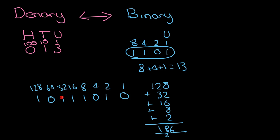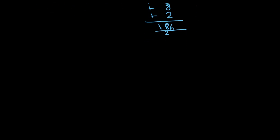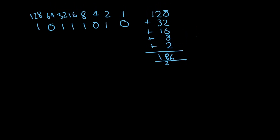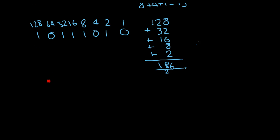All I've done is add up all the numbers that have a one underneath them using basic maths. So that's how you convert from binary to denary. But you also need to go the other way around — you might need to convert a denary number into binary. So let's try another number: 194.